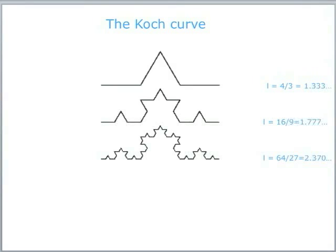A bit like the coastline. Keep on doing that and eventually you end up with the Koch curve — this is after effectively an infinite number of iterations. If that length started off being a metre, we've seen that the length increases at each step. The length of that Koch curve is, in fact, greater than the circumference of the Earth in about 60 iterations. So although that distance is still one metre, the length of that curve is in fact infinite. You've been able to pack infinity into a finite space.